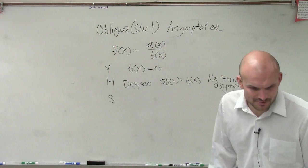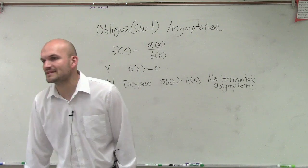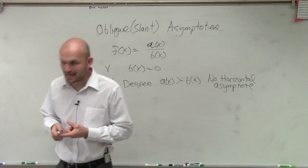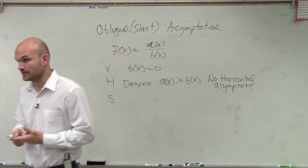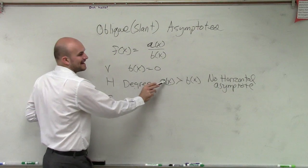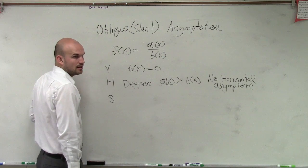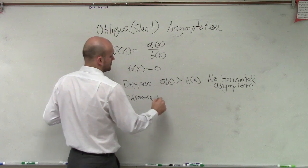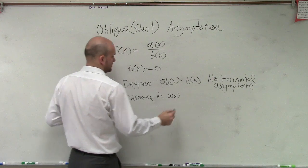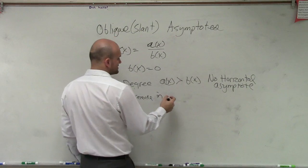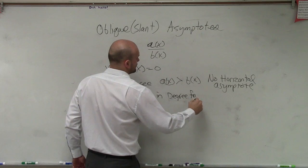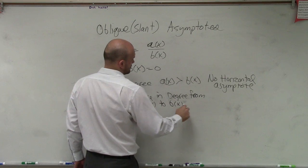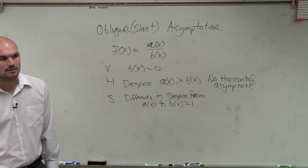So what the slant asymptote, which I had in here, when do we have a slant asymptote? Well, it's obviously not when my degree of my numerator is less than the degree of the denominator, or it's not when they're equal to each other. But we're going to have a slant asymptote when we have a of x is greater than b of x. However, the difference in the degree, so the difference in the degree from a of x to b of x is going to equal 1.